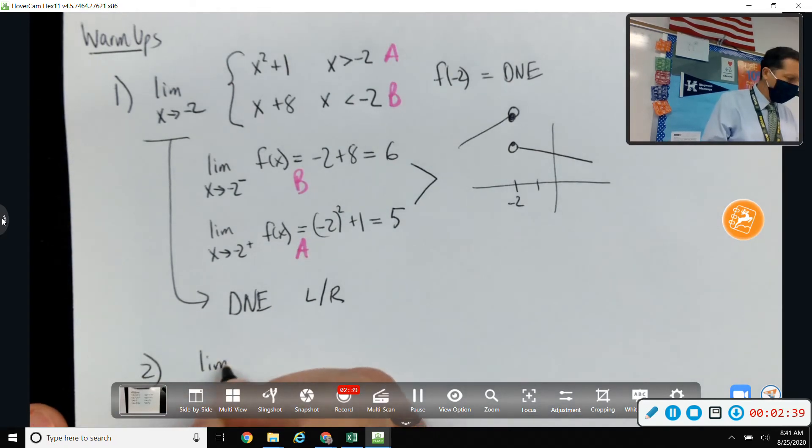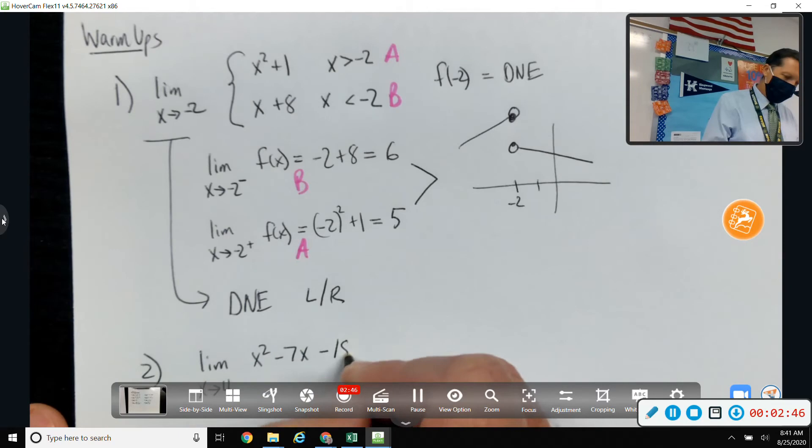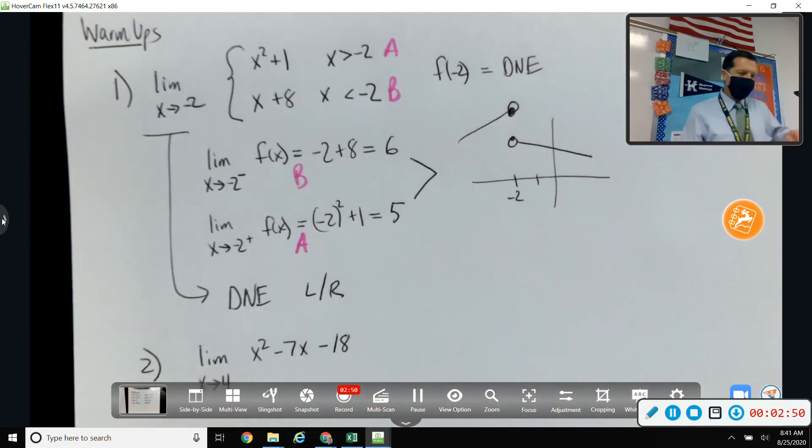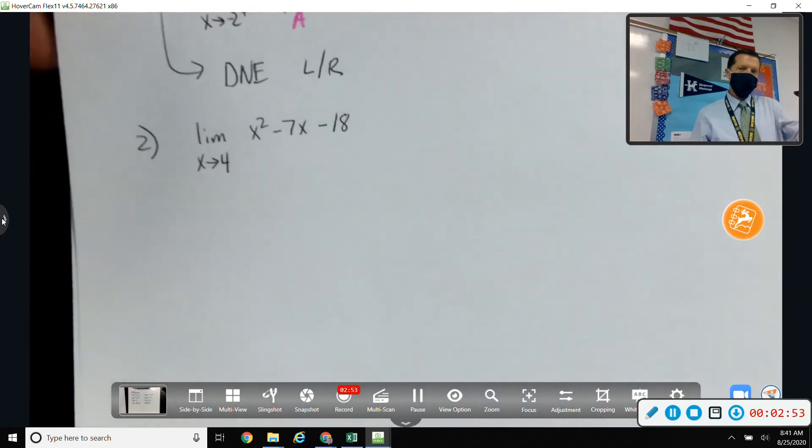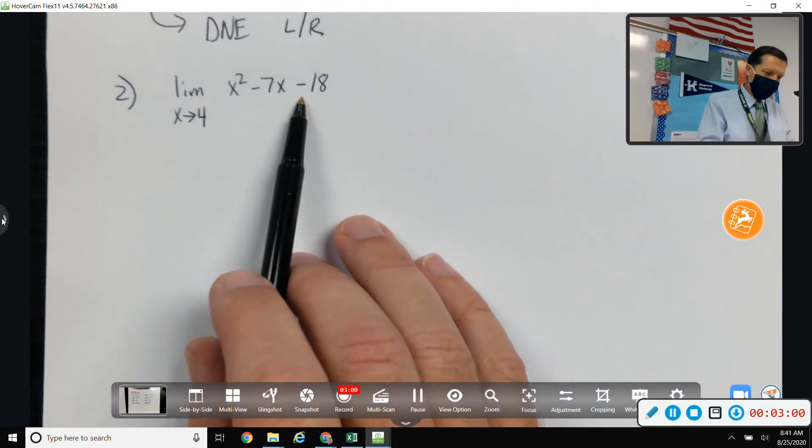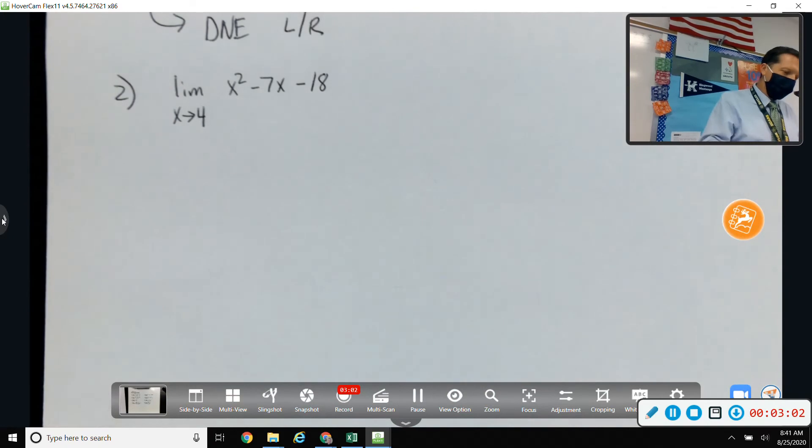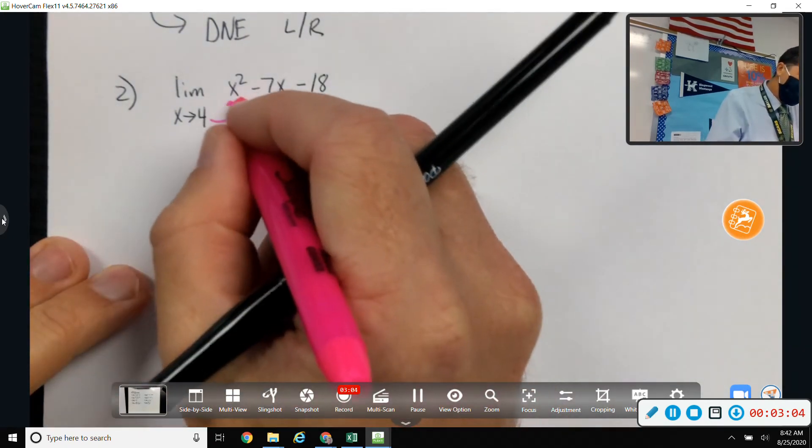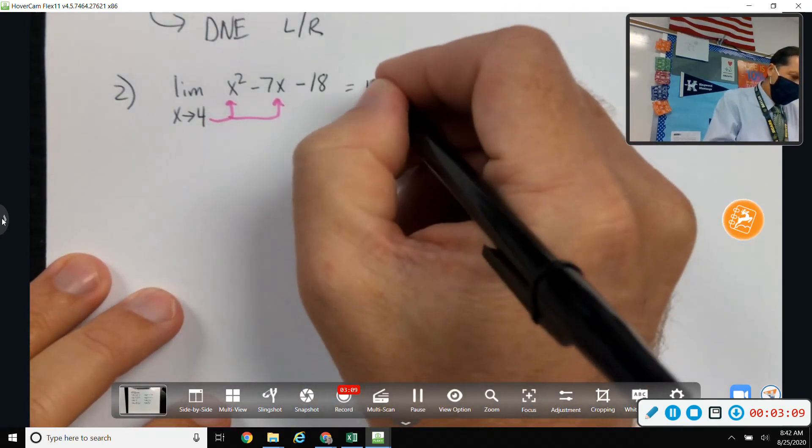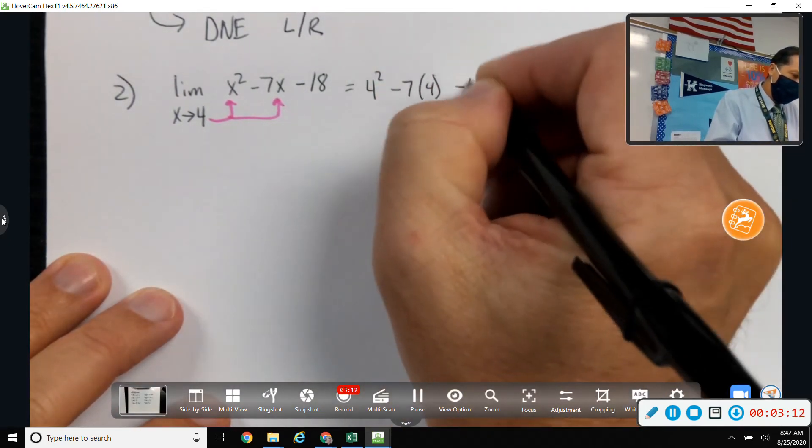Number 2. That might be the hardest one on the page, at least the one that takes the most writing. Limit as x approaches 4 of x squared minus 7x minus 18. Well, again, always remember to try to substitute first. So does that factor? Yeah. Does it matter? No, because all I need to do is plug in 4. And if nothing weird is going on, then that will give me the answer.